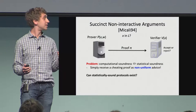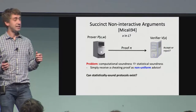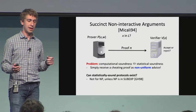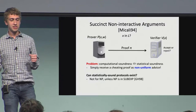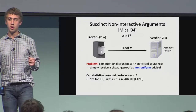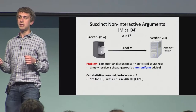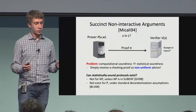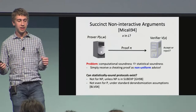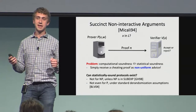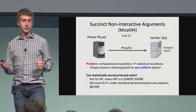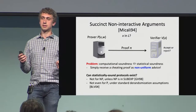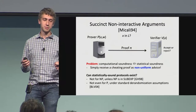The question is whether statistically sound protocols can actually exist. Unfortunately, for NP languages, the answer is no, assuming that NP can't be decided in sub-exponential time. And even for P, given standard derandomization assumptions, this notion is impossible to achieve.